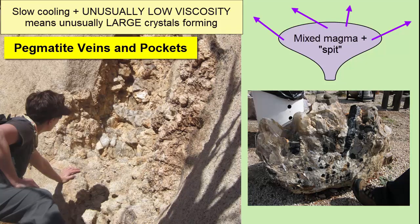In these pegmatite intrusions, because of the high concentration of incompatible elements in the spit phase, we also see rare minerals forming like tourmalines, beryl, and emeralds.